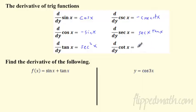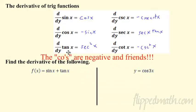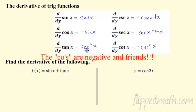Cotangent's derivative is negative cosecant squared. A couple things to help you remember: all the 'co' functions are negative — cosine is negative, cosecant is negative, cotangent is negative. So all things that start with 'co' are negative. Cotangent makes a cosecant; cosecant makes cosecant cotangent — they're kind of friends. If tangent makes secant squared, then cotangent makes cosecant squared. If you know the reciprocal functions, you're good to go. Secant makes secant tangent.